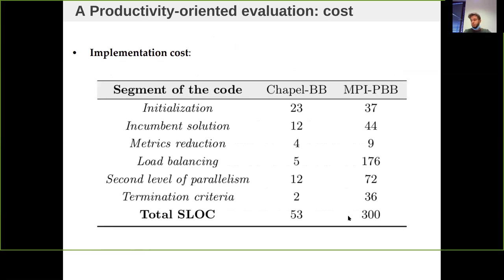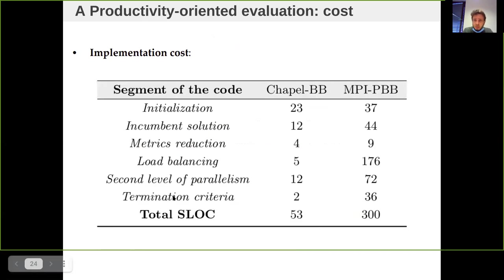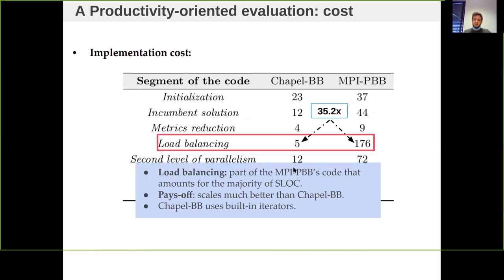In terms of programming cost, the MPI code is roughly six times more costly than the Chapel code. The largest fraction of the MPI code is the state-of-the-art work-stealing mechanism, which pays off because the MPI code can maintain around 90% of linear speedup for the most challenging instances. So it's six times more costly, but the work-stealing mechanism is much more efficient.